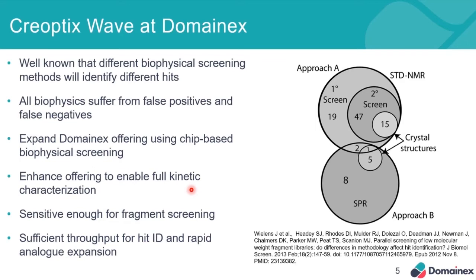The GCI platform — the way the chips and valves work — facilitates determination of very fast off-rates, which is perfectly ideal for weak affinity fragment screens. The valves are also non-clog, which means we can put more crude samples through it.